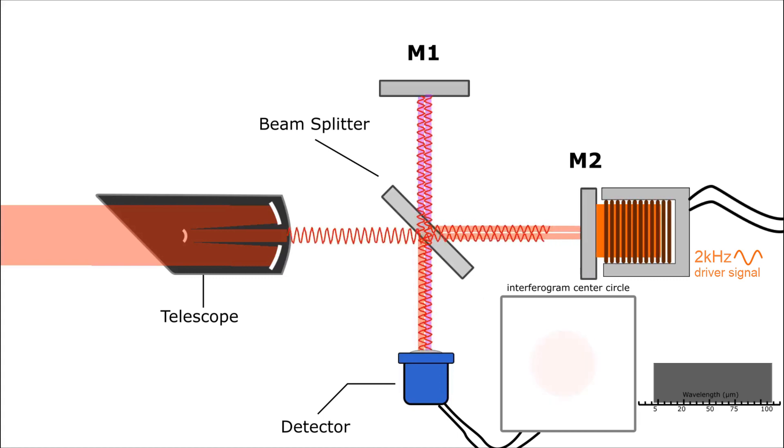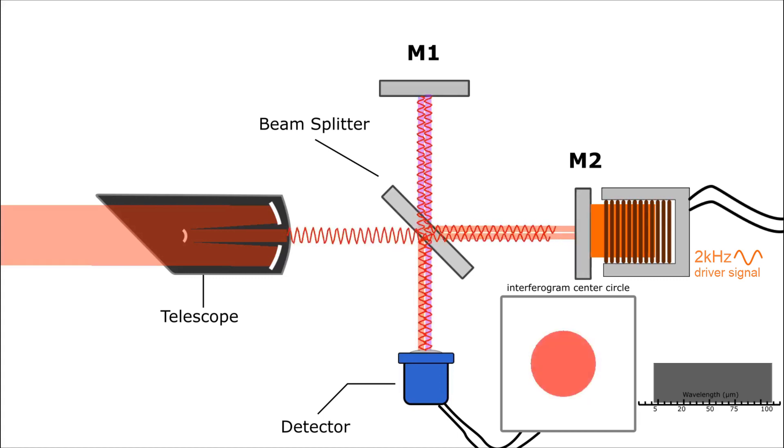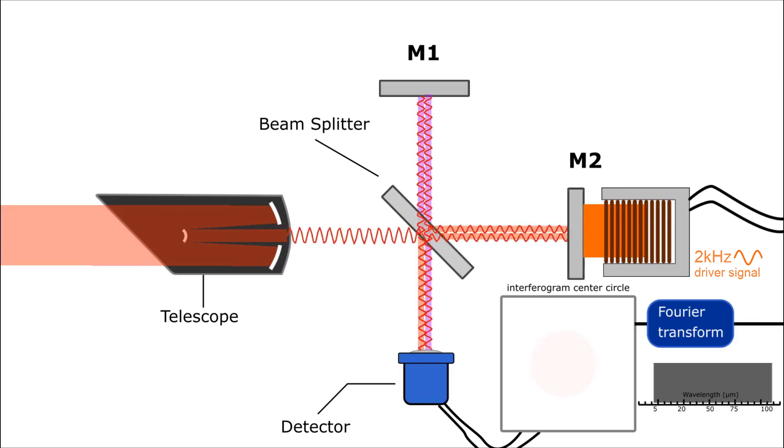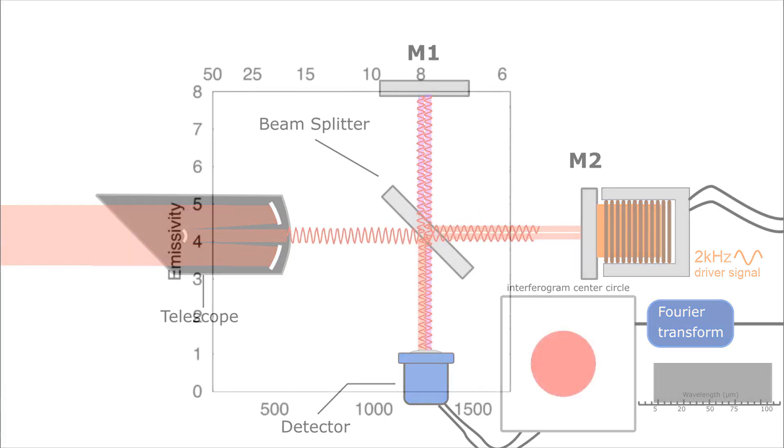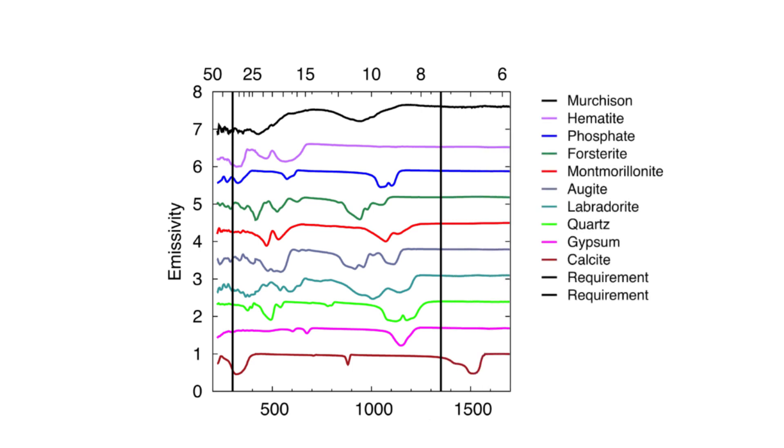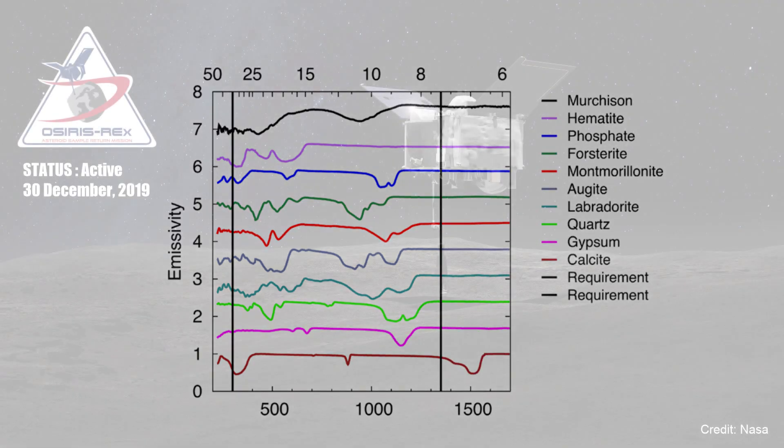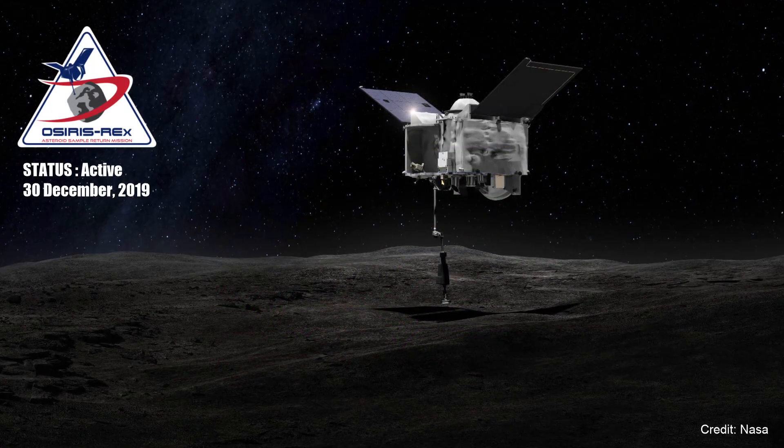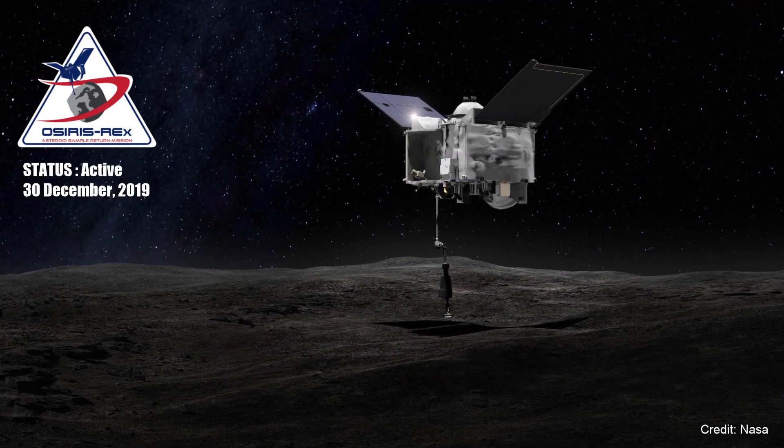Since the detector measures intensity over mirror distance, this data must be converted to intensity over frequency. So a Fourier transform is performed on the input signal before it leaves OTIS. After all, this is a Fourier transform spectrometer. We end up with a nice spectra which can then be matched to spectral signatures of known minerals. And that's how OSIRIS-REx knows where to find the sample it needs for a return mission home.